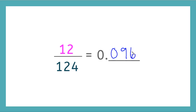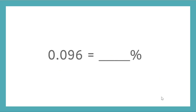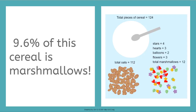Now, what do you think we can do with the decimal that would have a real-world application? That's right — we can write it as a percent. Remember, to do that, we move the decimal two places to the right. So I'll take this decimal, move it one, two places. So my percent ends up being 9.6. And now we can say that this cereal is 9.6% marshmallows.